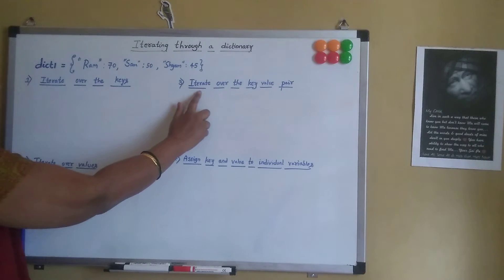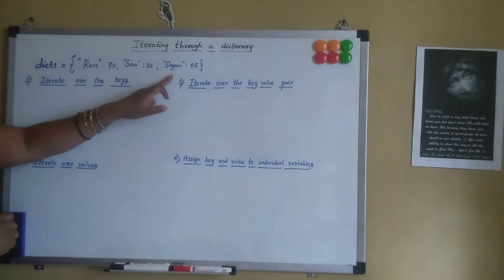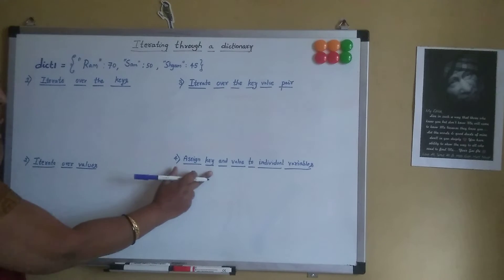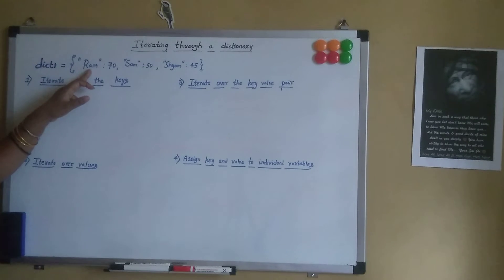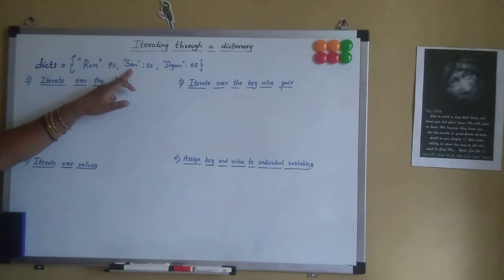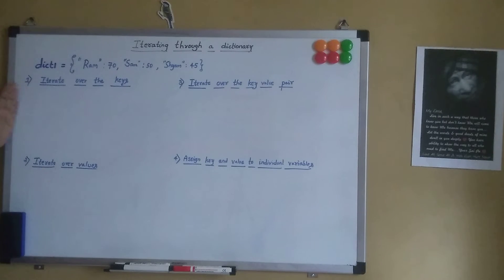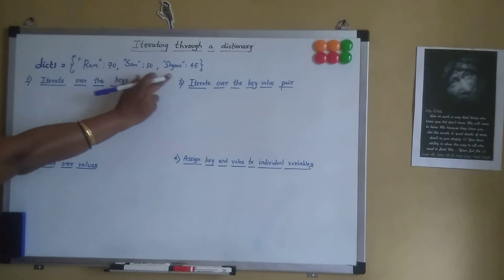The third method is iterate over the key-value pair. When we give the key-value pair, we get ram:70, sam:50, cham:45 in tuple format. The fourth method is to assign key and value to individual variables — the key variable holds ram, sam, sham and the value variable holds 70, 50, 45 respectively.